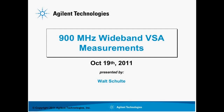In today's webcast, Walt will discuss how to make 900 MHz wideband measurements with the PXA Signal Analyzer as a tunable down converter, along with an Infiniium oscilloscope as a digitizing front end and vector signal analysis software. We will begin today's webcast in just a moment.